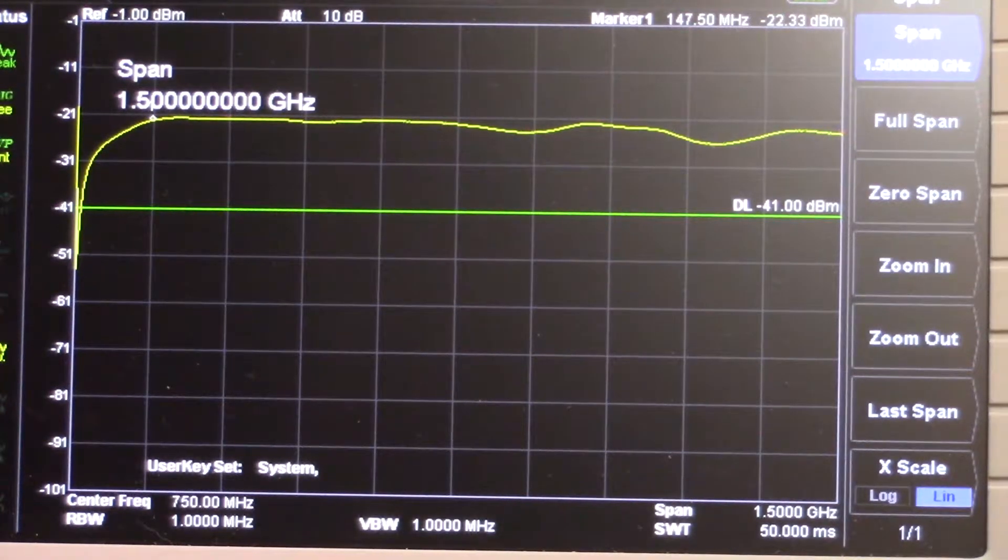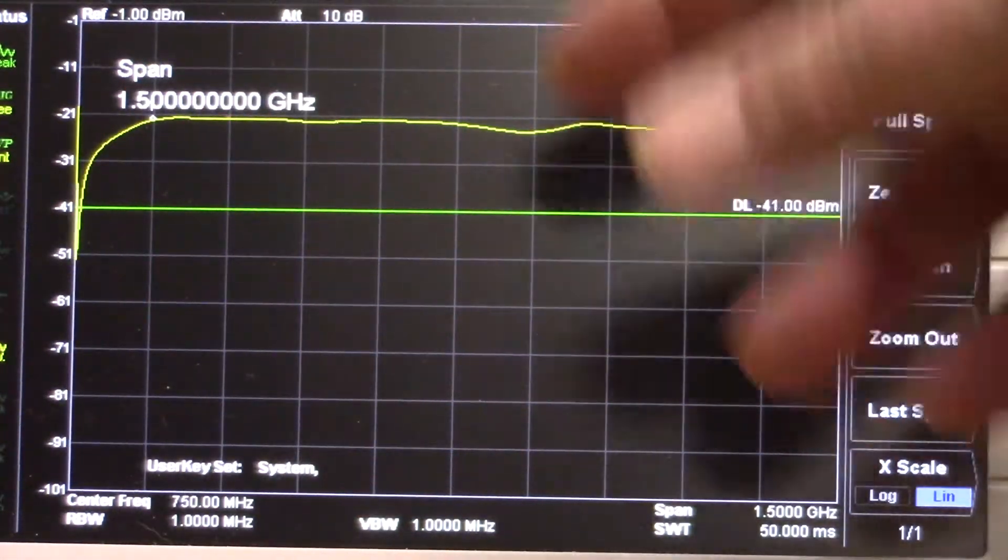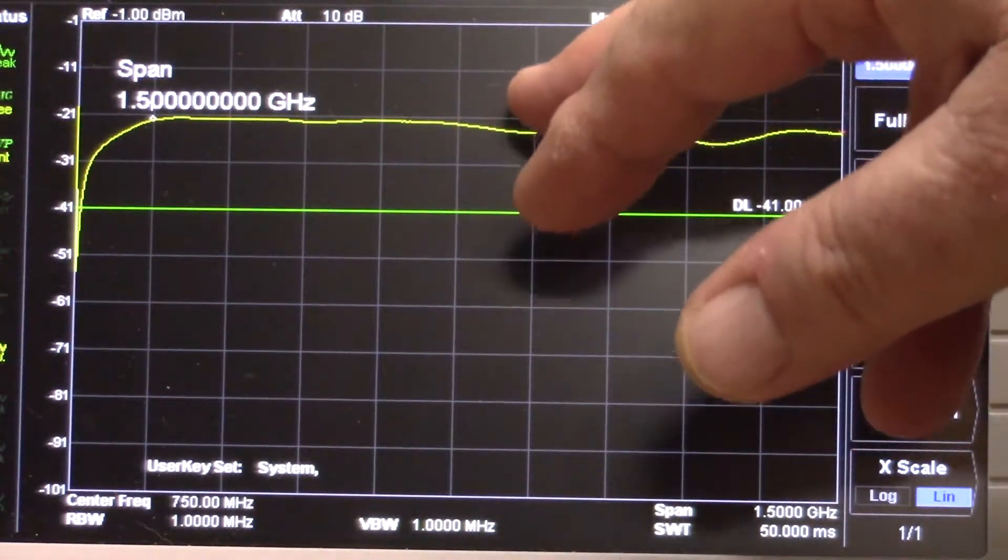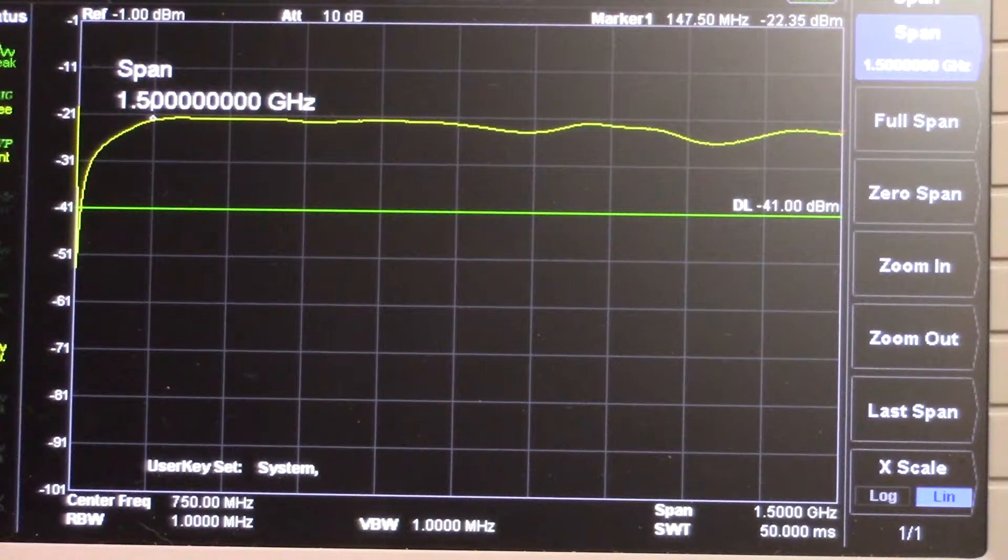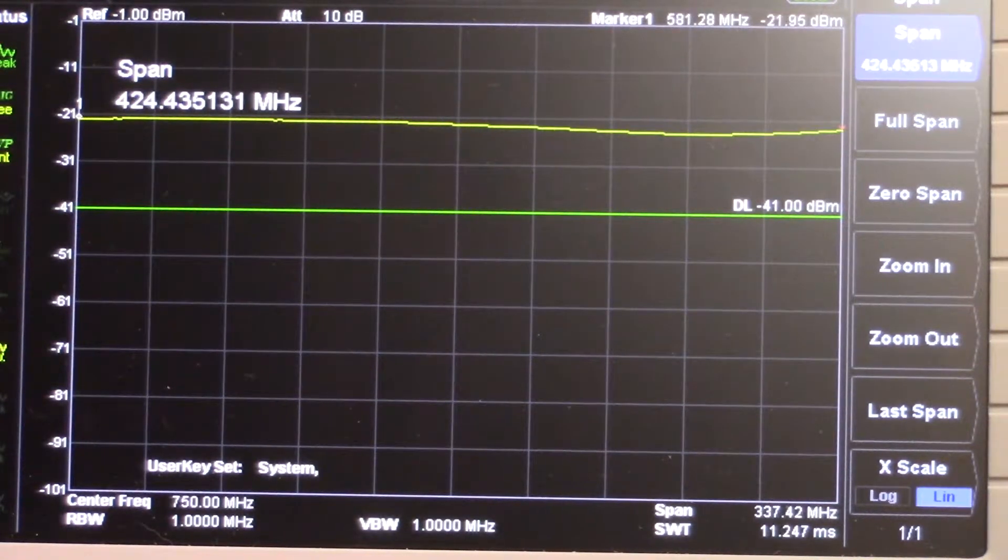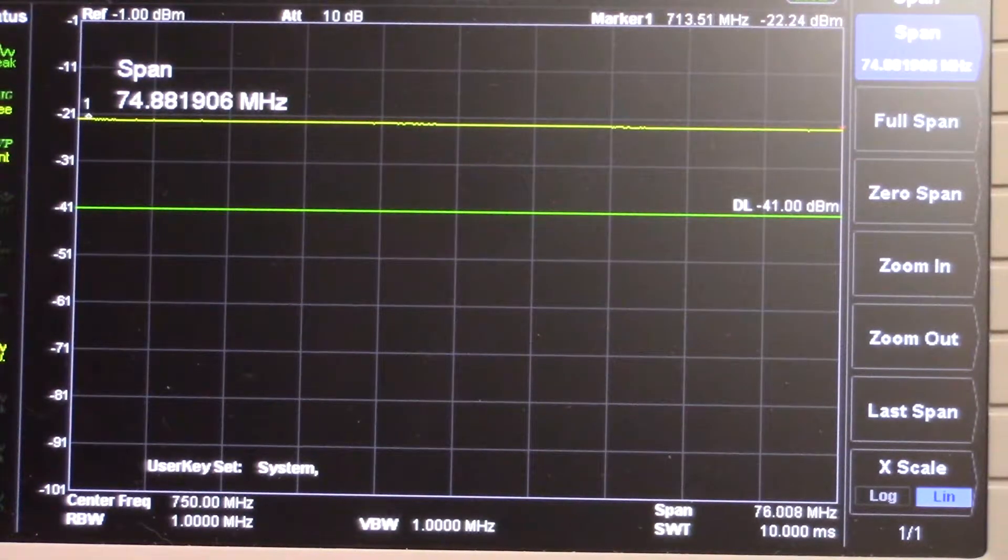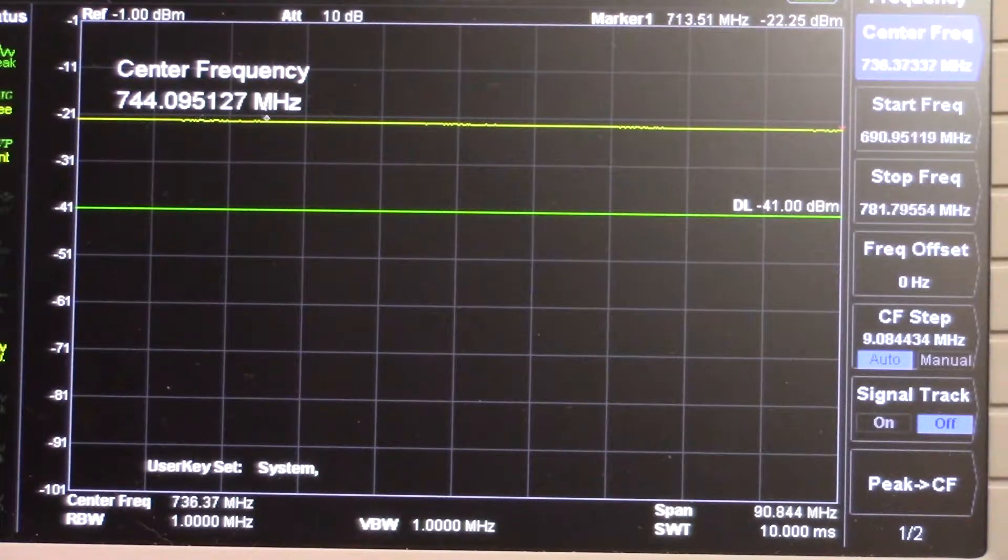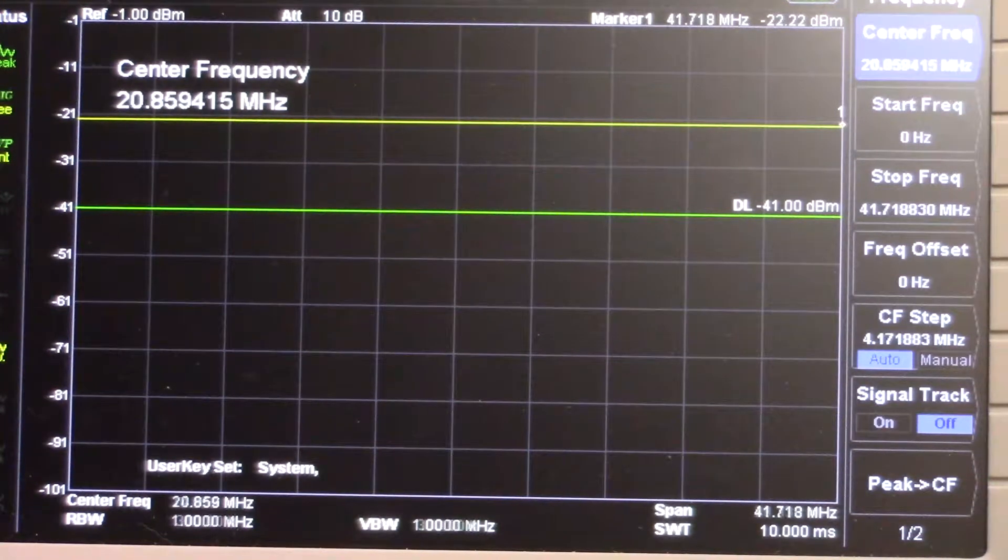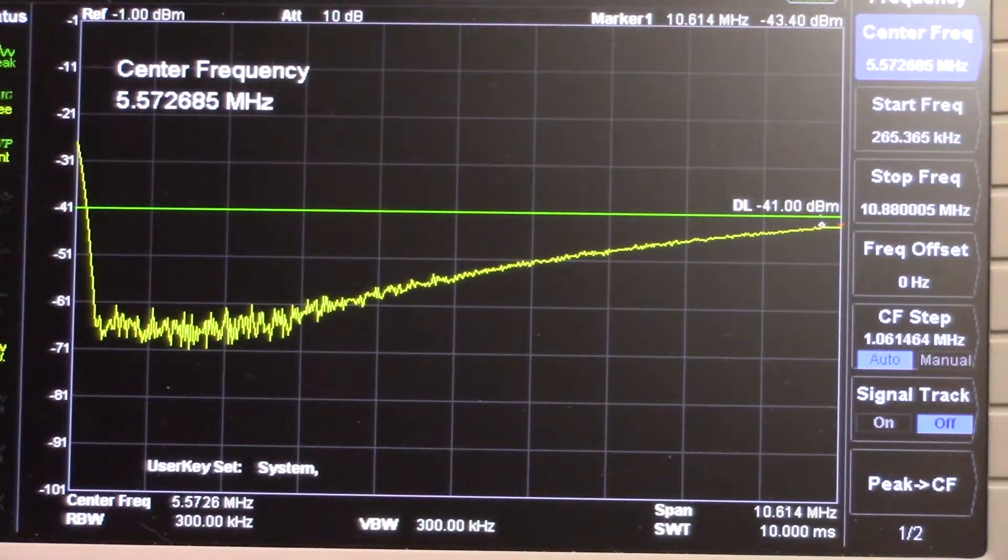So this is doing the opposite of the other filter. I got to move this thing, I zoomed it so far out. There we go. So we have the opposite, we're blocking those lower filters and as we go up in frequency we're allowing it to pass.